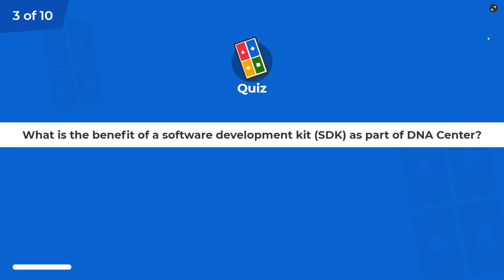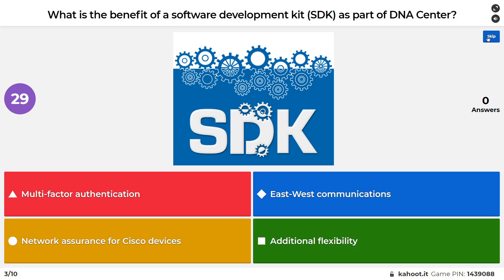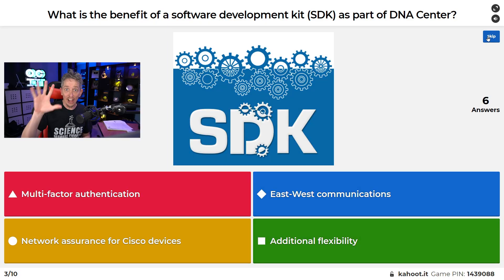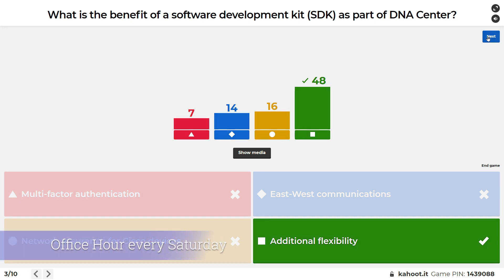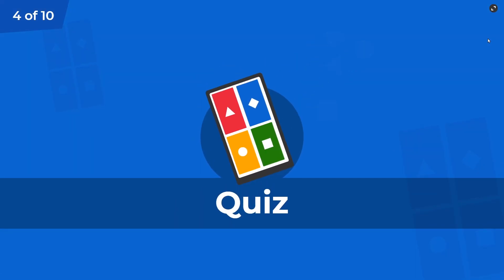Here's question three of 10: what is the benefit of a software development kit as part of DNA Center? In the office hour, which is every Saturday at 10 o'clock on my Discord server, the topic was network automation. We covered a lot of these topics and you're always welcome to join. It is free every Saturday, 10am Pacific. Adjust for your time zone.